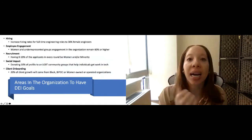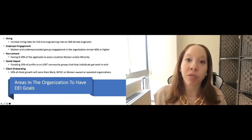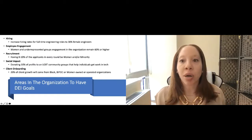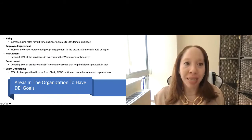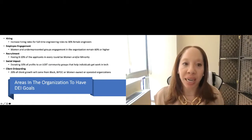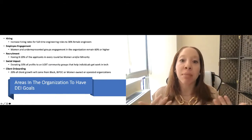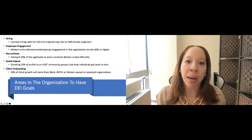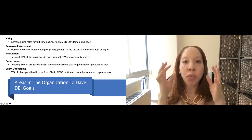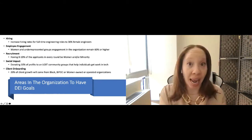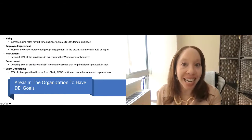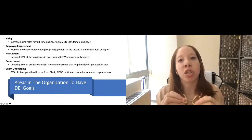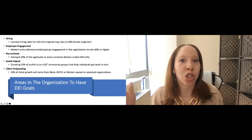So what does that look like for hiring, for example? We could make a goal that says increased hiring rates for full-time engineering roles to 30% female engineers or employee engagement, women and underrepresented groups, engagement in the organization remains 60% or higher. Recruitment, having 8% to 10% of the applicants in every round be women or a minority. Social impact, donating 10% of profits to an LGBT community group to help individuals get work in tech. Or client onboarding, 20% of client growth will come from Black, BIPOC or women-owned or operated organizations. So when you really start to focus in on where you want to have the impact, you can then start to figure out what goals do we want to set. Now, are you going to hit that target? Hopefully you do, but there's a chance you may not, but that is okay. We have to start to set the bar somewhere so that we could start to make the right actions towards those changes.